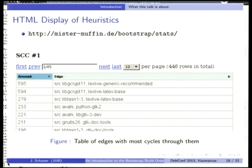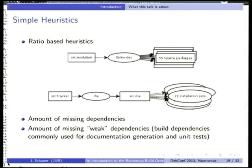This table, for example, is a table of edges with most cycles through them. You see an edge defined as a source package build-depending on a binary package, and apparently there are 595 cycles through that — meaning if you could build libgcrypt11 without that dependency, already 600 cycles would be broken. There are also ratio-based heuristics: for example, if you could build source 'evolution' without libmx, you would lose the connection to 55 other source packages. Another heuristic gives you the amount of missing dependencies — source packages with only one build dependency missing might be easy to fix.